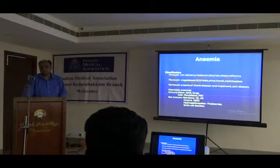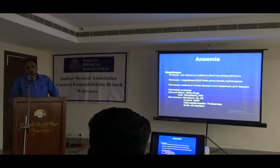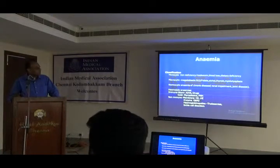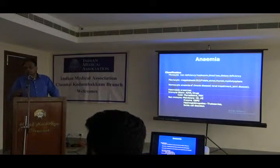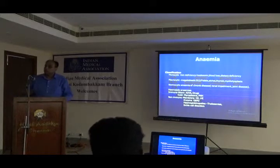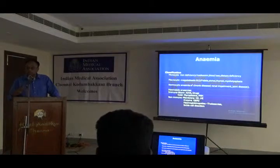Anemia is quite common and involves reduced red cells. We can classify it by cell size. Microcytic anemia is commonly due to nutritional iron deficiency or blood loss. Macrocytic anemia, where red cells are bigger, can be due to deficiency of vitamins such as B12 or folate, excess alcohol consumption, or a bone marrow problem like myelodysplasia with ineffective erythropoiesis.